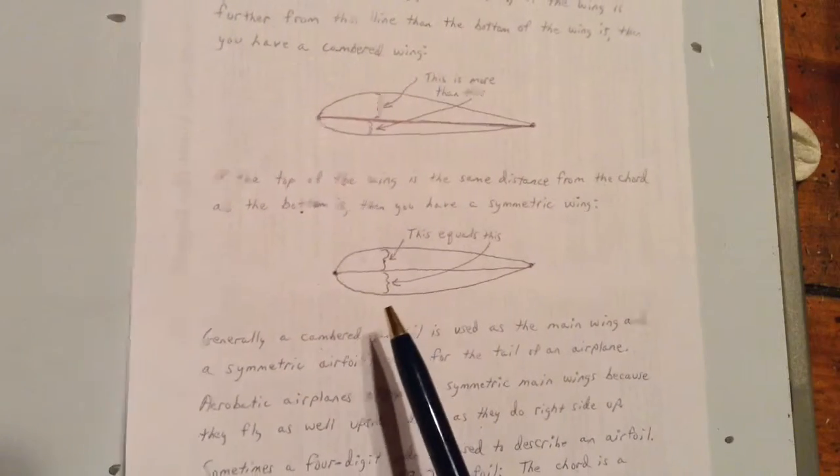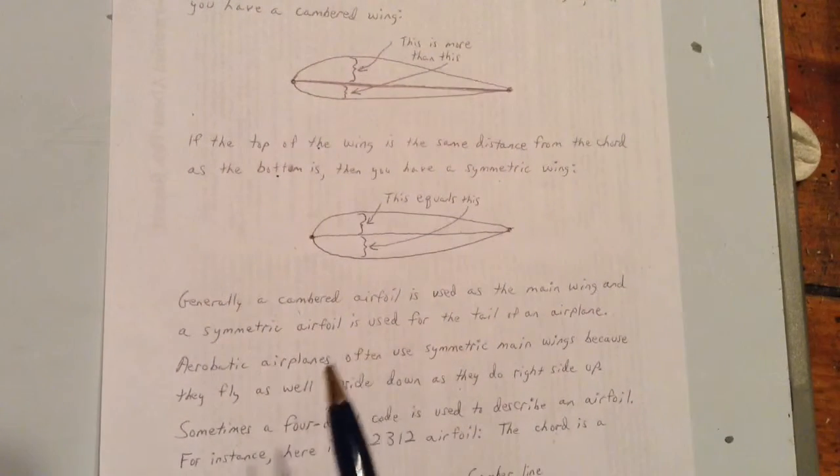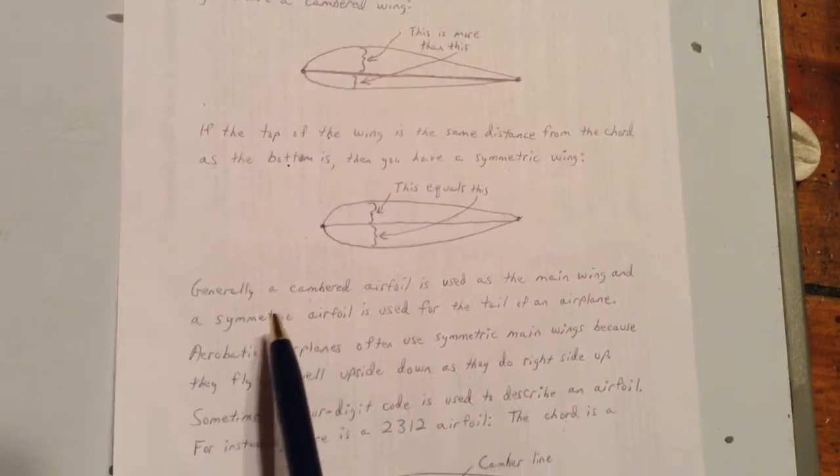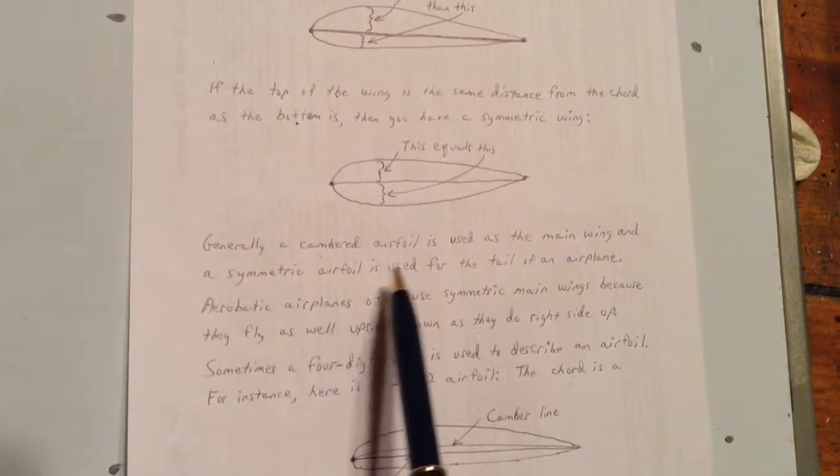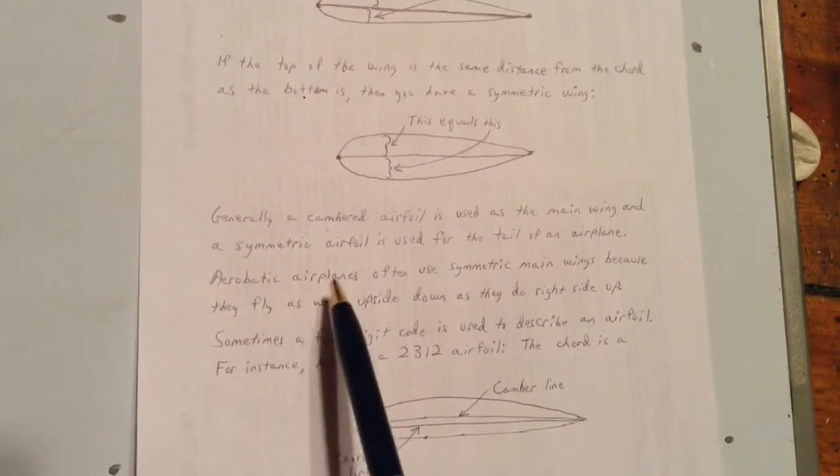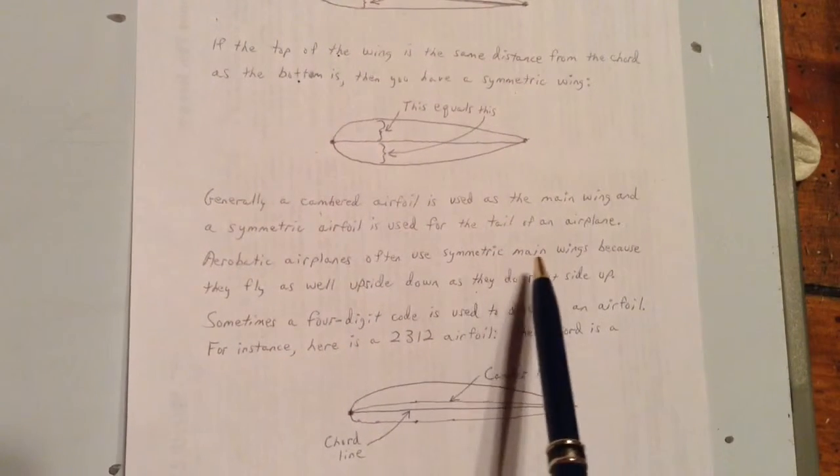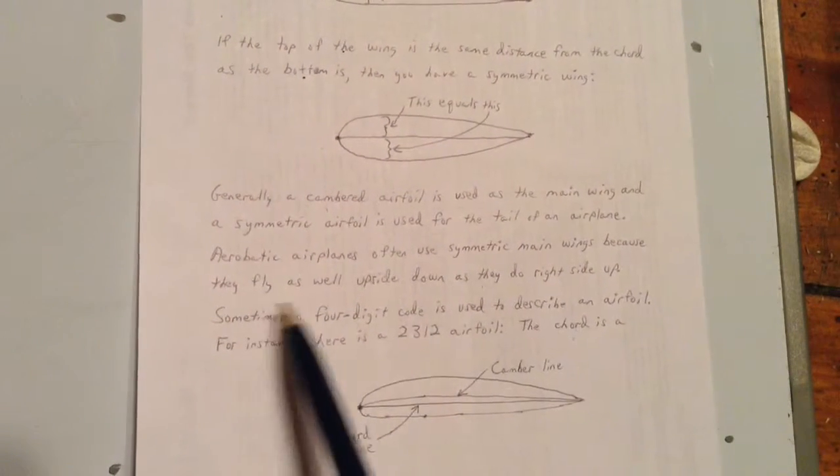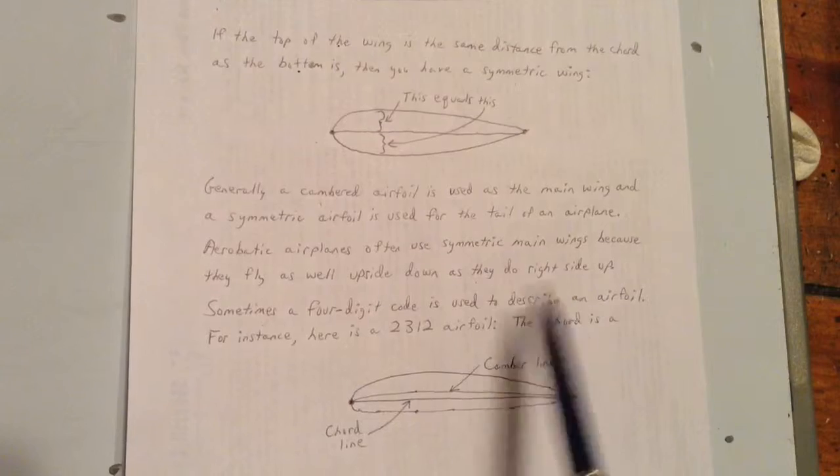Generally, a cambered airfoil is used as the main wing. Now we're talking about what I said a while ago, and a symmetric airfoil is used for the tail of an airplane. Aerobatic airplanes often use symmetric main wings because they fly as well upside down as they do right side up.